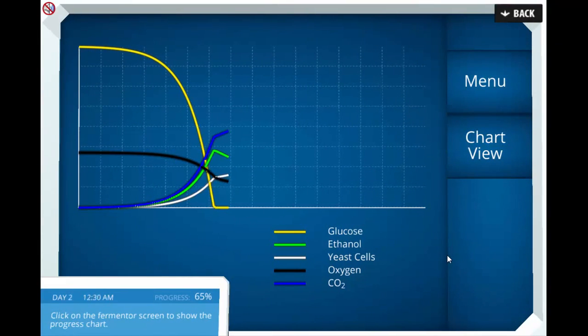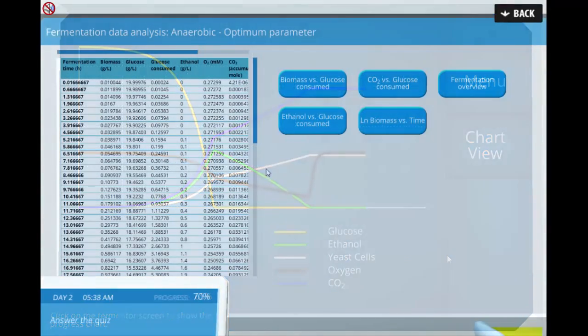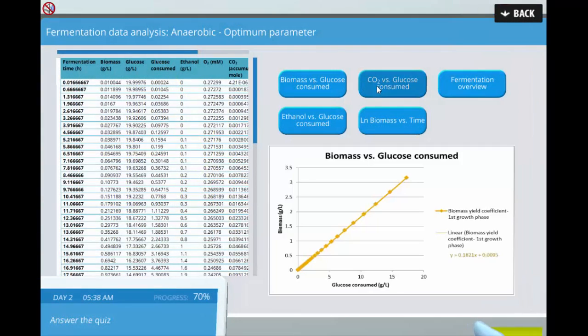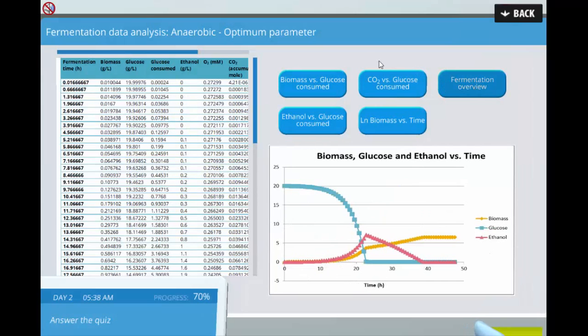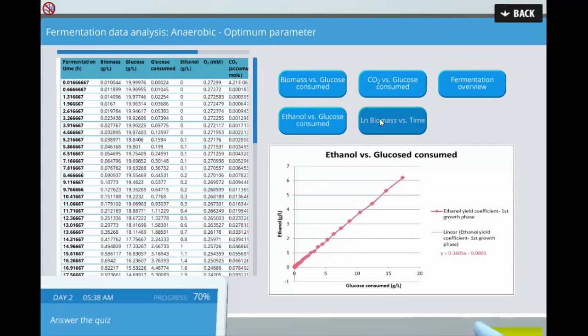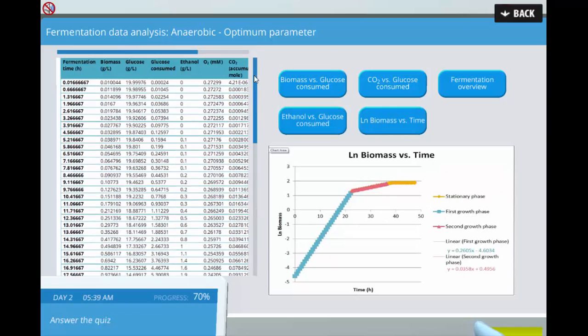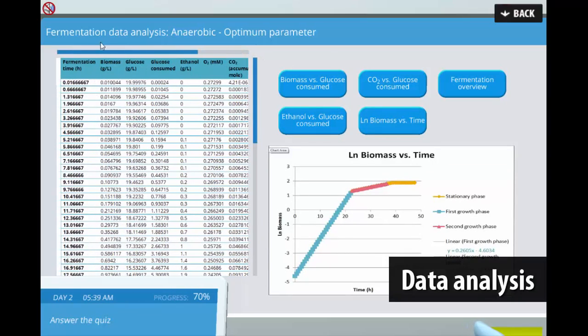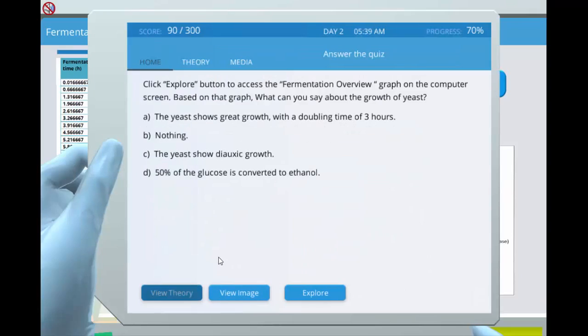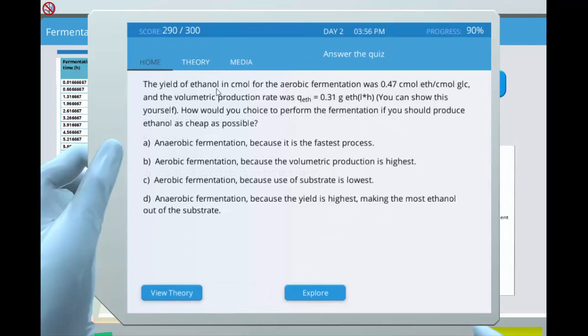A graph will be plotted based on the selected parameters. Furthermore, a spreadsheet containing time, biomass, glucose, ethanol, oxygen, and carbon dioxide amounts reflecting the specific parameters is shown. Students must then analyze the output data and create a plot that shows the optimum temperature and pH for producing bioethanol.